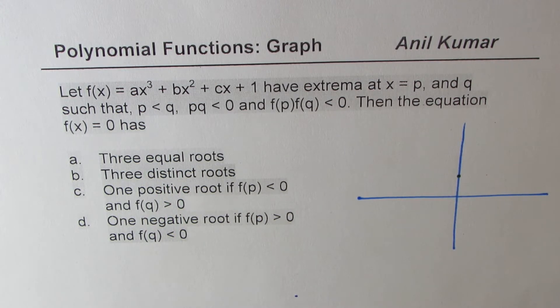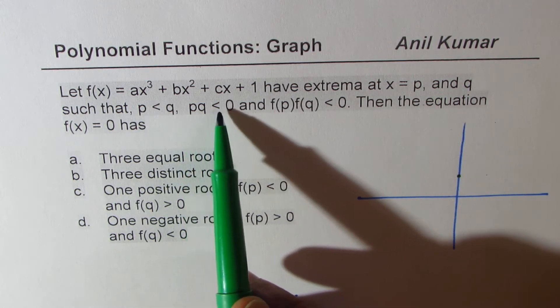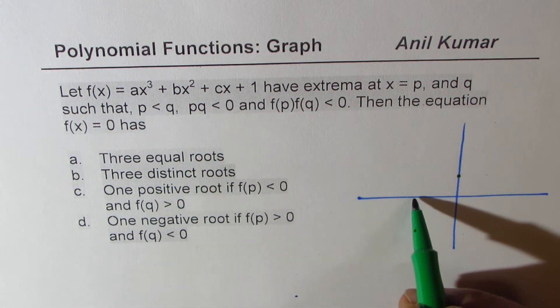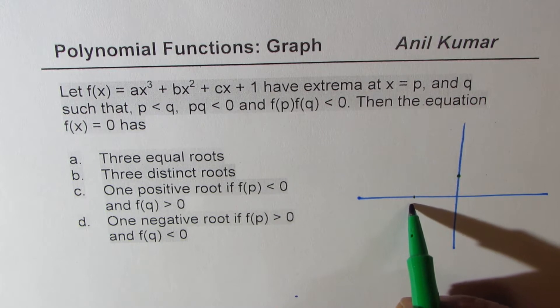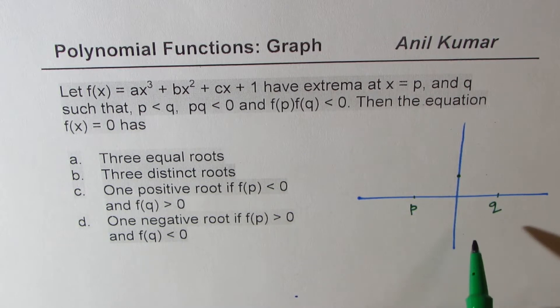Now we have p and q, where p is less than q, and product of p, q is negative. That means one of them is positive, and one of them is negative. So this is p on this side, and on this side, let's keep q.